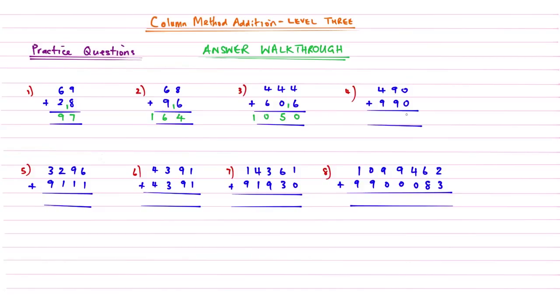Question 4: nothing add nothing is nothing. 9 add 9 gives me 18. Then 4 add 9 gives me 13, but then add the 1, and that gives me an answer of 14. You can see again the method is really quick when you've got it off pat.